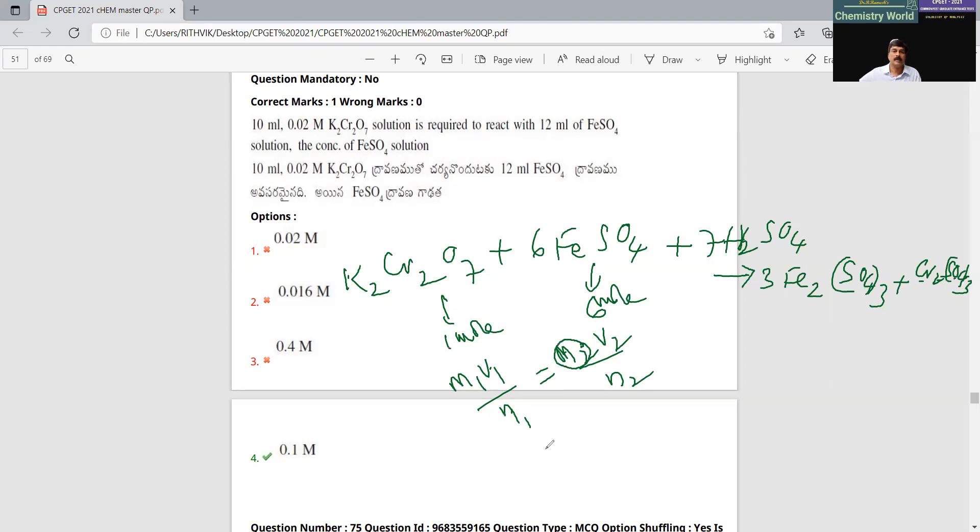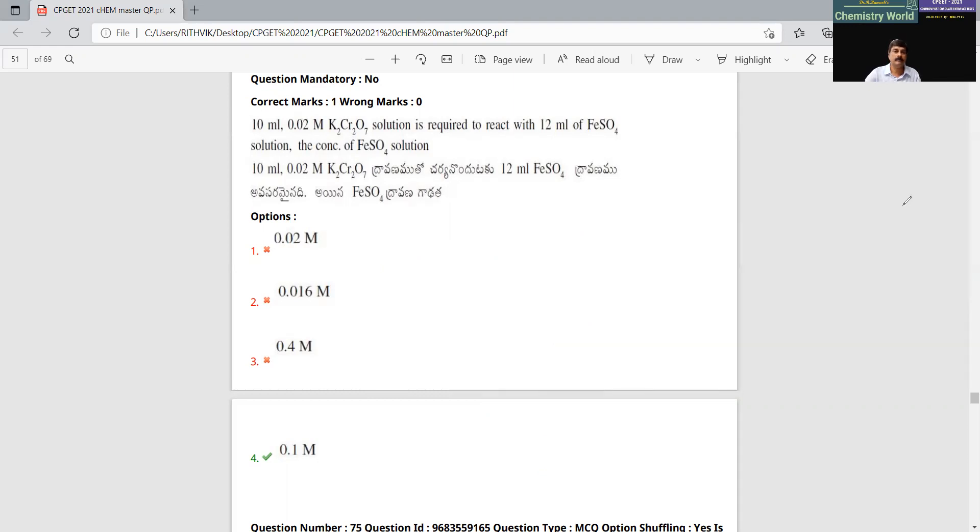This is an argument. 10 into 0.2 divided by 1 equals x into V2 is 12 divided by 6. If you can bring this side, you need this current. 0.01 into 10 into 0.5, that's right. Okay.